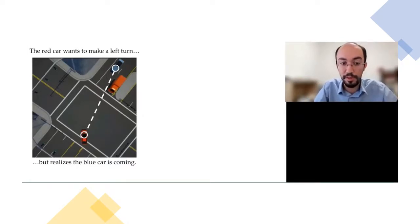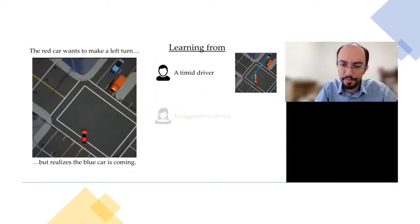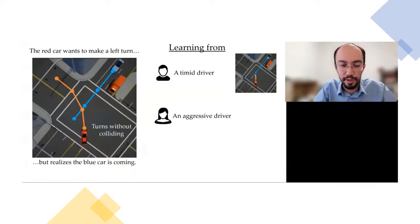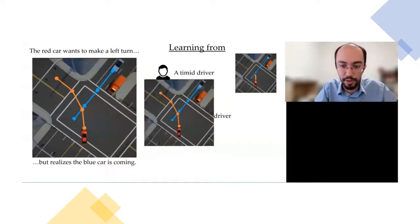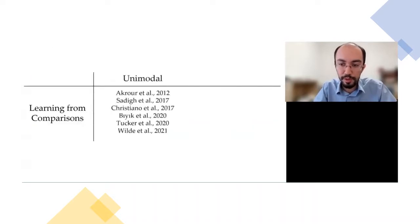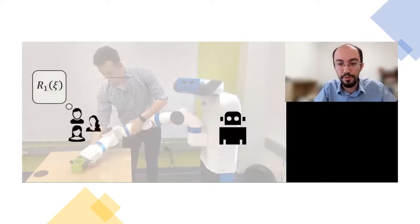If using a reward function learned from a timid driver, the car may stop and give way to the blue car. Alternatively, if data came from an aggressive driver, the car could try to complete its turn before the blue car reaches the intersection. In both cases, the autonomous car was using data from one driver. But what if the data come from multiple users who have different reward functions and our robot doesn't know any of them — it doesn't even know who provided the data?